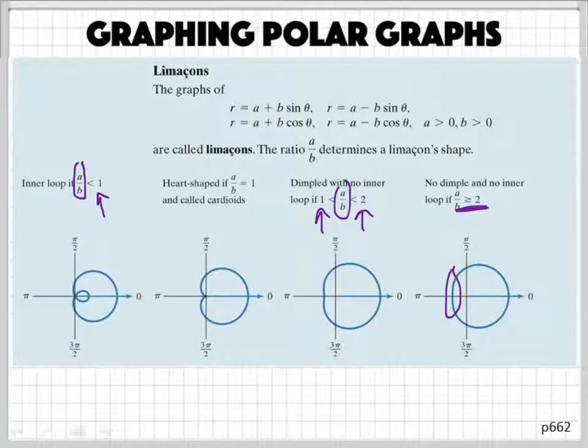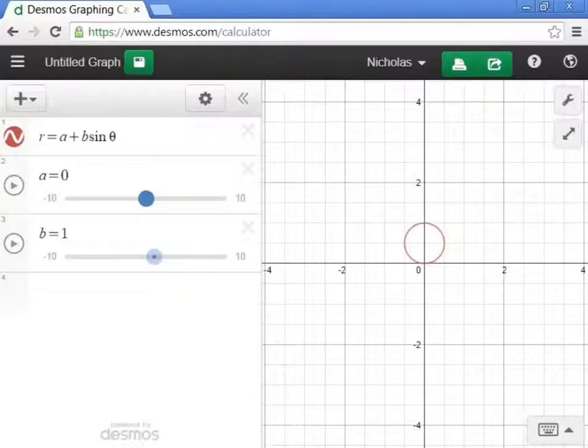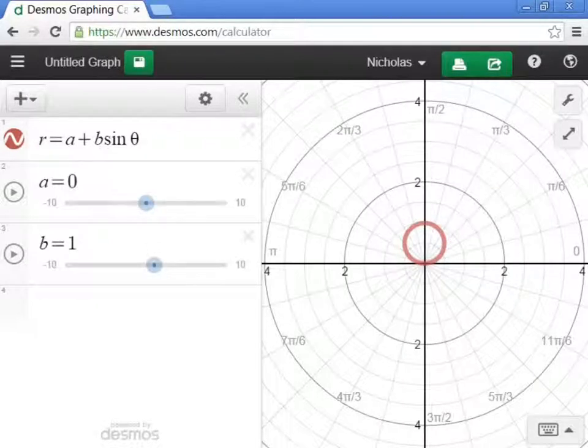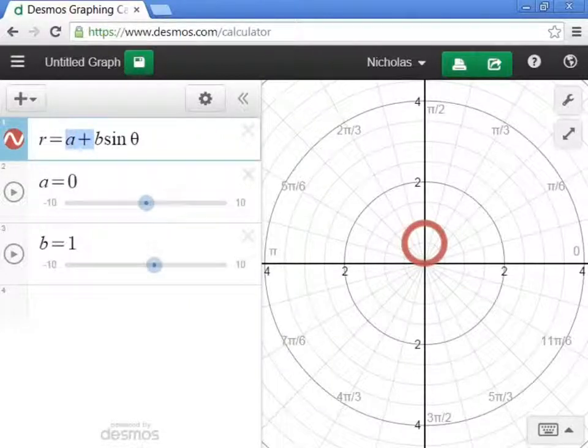Let's take a look at this on Desmos. So the graph that you see right here, let's go ahead and go projector mode and get on a polar grid. Okay, the graph that you see right here is when A is 0. So when there is no A, and that was what the basic graph looks like.